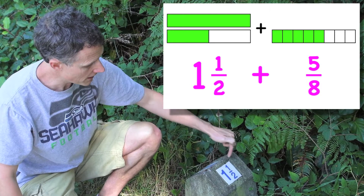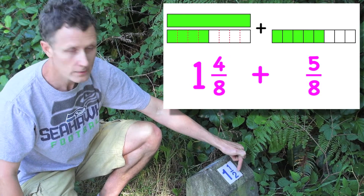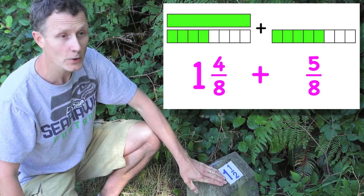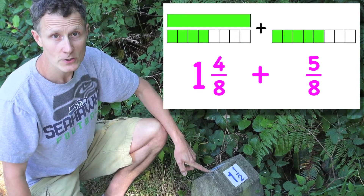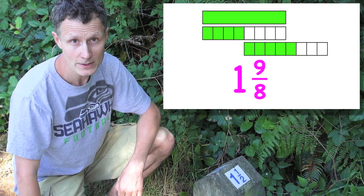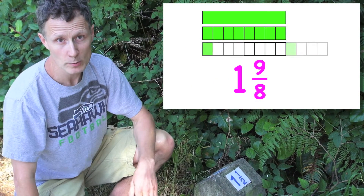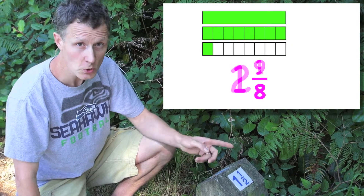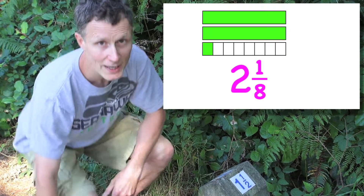So we're going to think of the one and a half as one and four-eighths. Then if we have one and four-eighths plus five-eighths, that gives us one and nine-eighths. Now one and nine-eighths is an improper mixed number — it's actually two and one-eighth. So that's how long this path is: two and one-eighth miles.